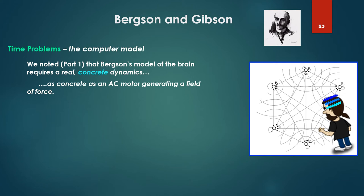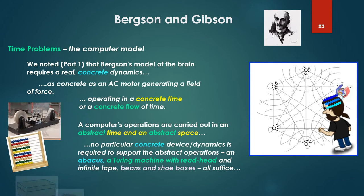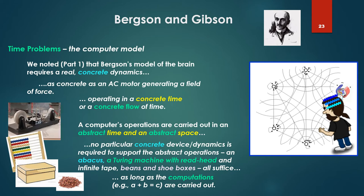We noted in part one that Bergson's model of the brain requires a real concrete dynamics. This concrete has an AC motor generating the field of force, though it's not an AC motor, obviously. And this is operating in a concrete time, in a concrete flow of time. Not the computer's notion of time. The computer's operations are carried out in an abstract time, in an abstract space. It is a series of states. No concrete, no particular concrete device or dynamics is required to support the abstract operations. An abacus, a Turing machine with a read head and infinite tape, beans and shoe boxes to make a register machine all suffice. As long as the computations, for example, A plus B equals C, are carried out.